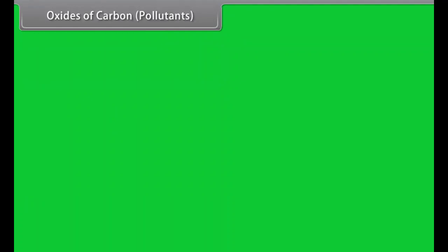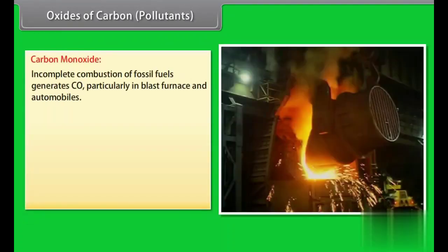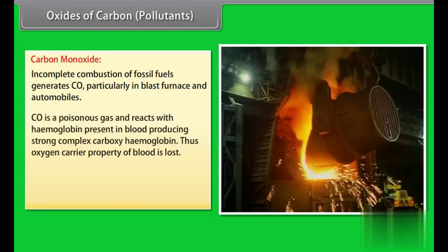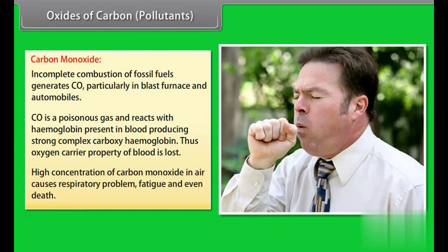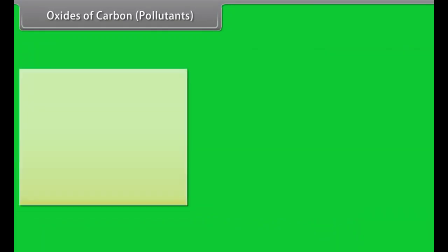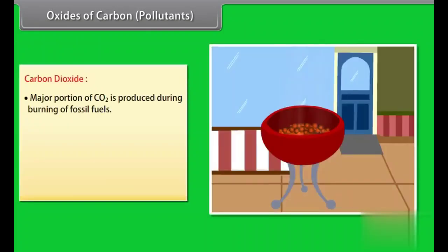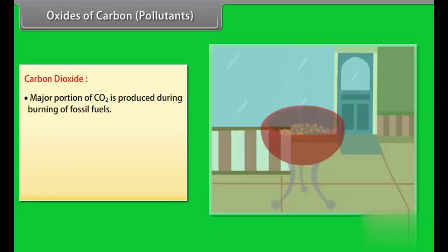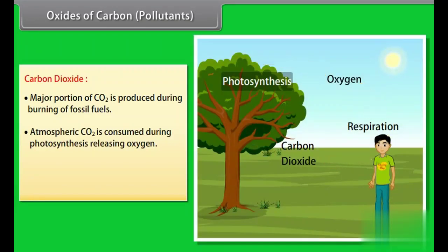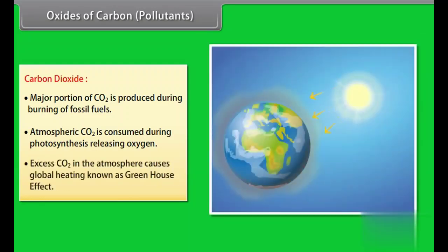Oxides of carbon. Pollutants: Carbon monoxide. Incomplete combustion of fossil fuels generates CO, particularly in blast furnace and automobiles. CO is a poisonous gas and reacts with hemoglobin present in blood producing strong complex carboxyhemoglobin. Thus, oxygen carrier property of blood is lost. High concentration of carbon monoxide in air causes respiratory problem, fatigue, and even death. Carbon dioxide: Major portion of CO2 is produced during burning of fossil fuels. Atmospheric CO2 is consumed during photosynthesis, releasing oxygen. Excess CO2 in the atmosphere causes global heating, known as greenhouse effect.